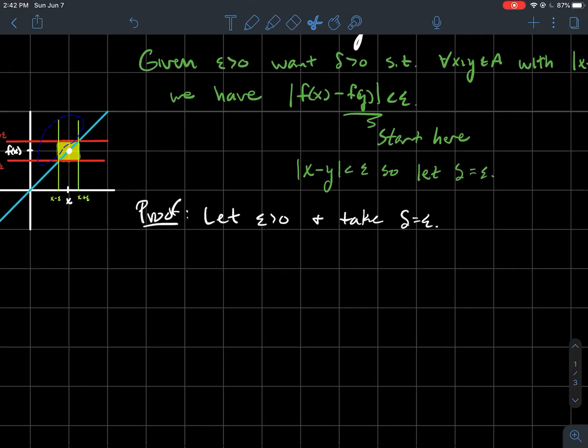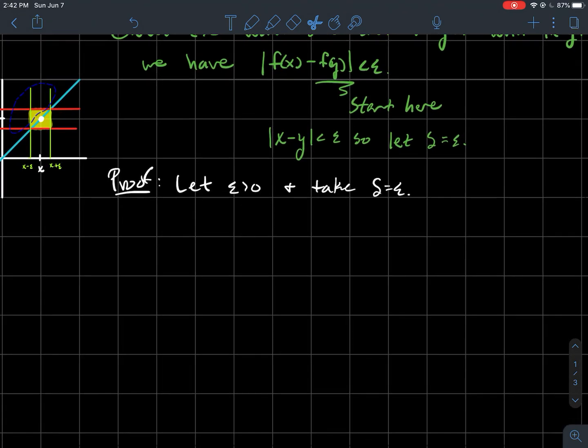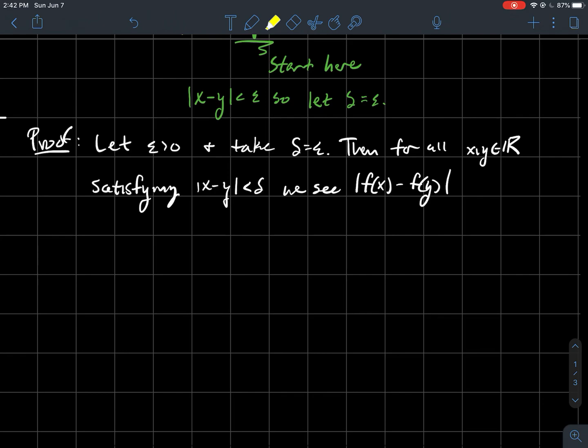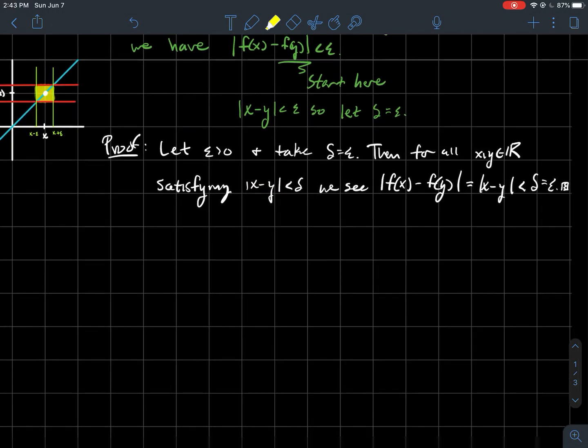So what's the formal proof look like? Well, let's let epsilon be bigger than zero and take delta to be epsilon. Then for all real numbers x and y, such that x and y are within delta of each other, which again is what this says, then we see that the outputs f of x minus f of y, that's the same thing as just this, which is less than delta, which is the same thing as epsilon. So not too hard of a proof there.